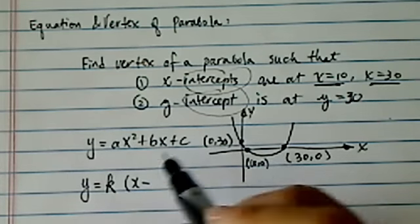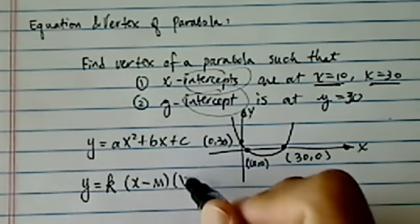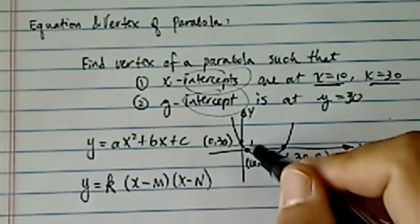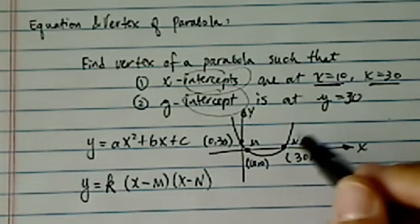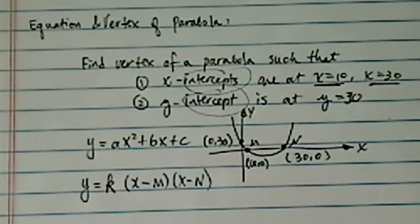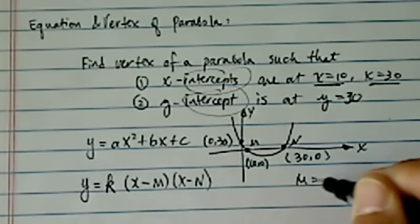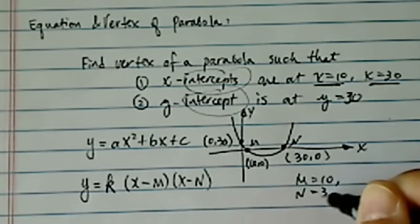I'm going to assume into the intercept form, x minus, let's call it m, n. So here's my point m, here's my point n. The reason I want to use that is, well, first of all, we have the information m is equal to 10 and n equal to 30.